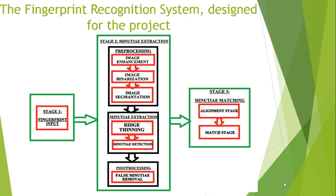Now let us proceed to the system designed for successful fingerprint recognition using minutiae extraction and matching. There are mainly three stages: the fingerprint input stage, the minutiae extraction stage where minutiae are extracted from the fingerprint after some processing steps, and the minutiae matching stage where the extracted minutiae are compared with the originally stored fingerprint. The details of each stage and sub-stage are explained in the following slides.